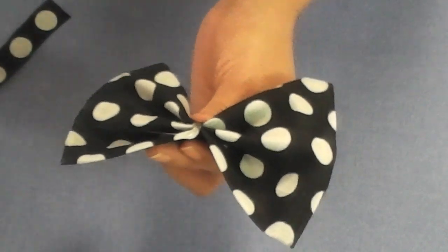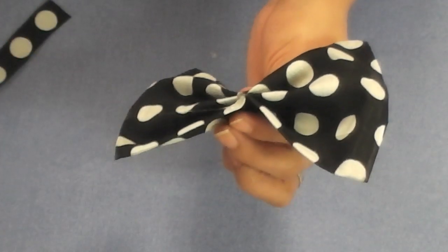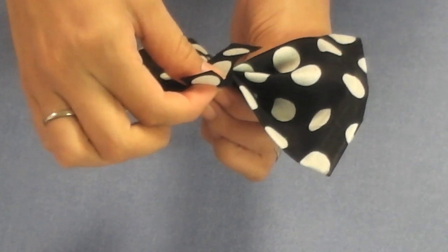Once you figure that out, just dab a piece of glue on the top of your bow and then just wrap around the piece of fabric.